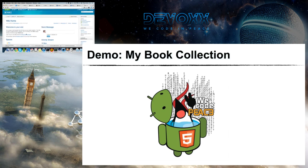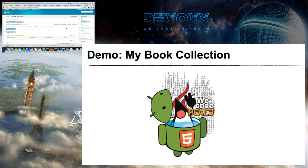Over here you can see that there are already some applications installed, like a blog, a dashboard, and so on. There is also the ability to get more applications. So there are two ways to get more applications to your wiki: one is to install existing applications, which we'll see a bit later, and the other is to create your own. So let's do that — let's create our own.